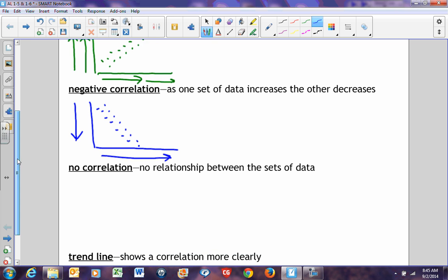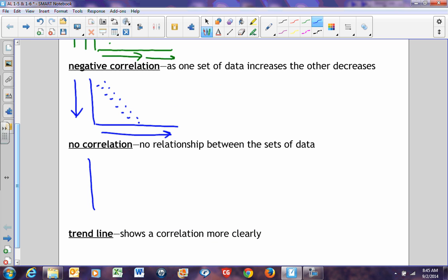The last type of correlation is no correlation. That means there is no relationship between the data whatsoever. Essentially, your graph kind of looks like this. I tell people it looks like someone sneezed on the page. Because as one set of data goes up, you can't tell if the other set of data goes up or down.